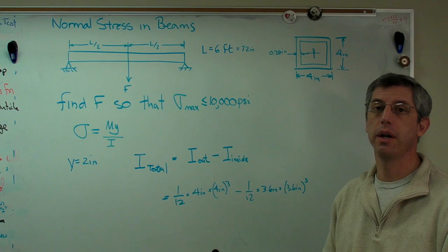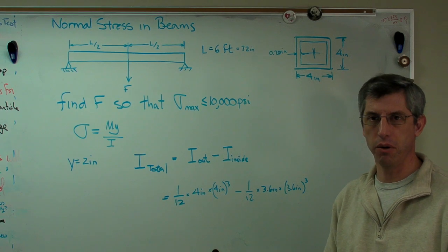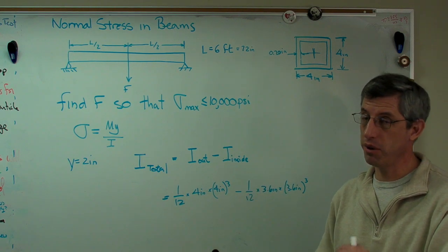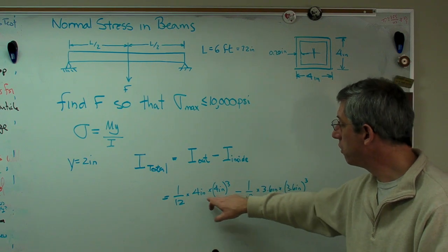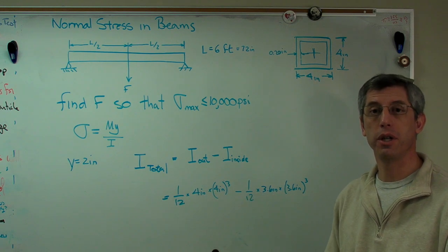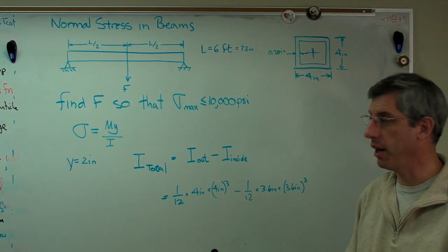If you track the units through the problem, at the end of the problem, the units are correct, the numbers will pretty much come along for the ride. The numbers are likely to be correct. If you go through a problem and the units are wrong, then the numbers are definitely wrong. When you don't track units, you give up a very valuable tool for checking your work as you go. If you track the units, you're going to get the right answer more often.